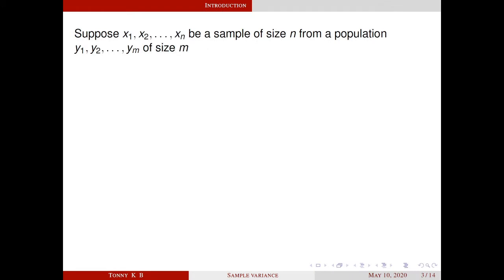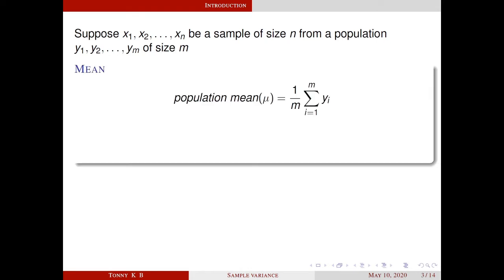For easy understanding, we consider a finite population. Suppose x1, x2, ..., xn be a sample of size n from a population y1, y2, ..., ym of size m. The population mean mu is defined as 1 by m, sigma i equals 1 to m, yi. In general, the population parameters are unknown.